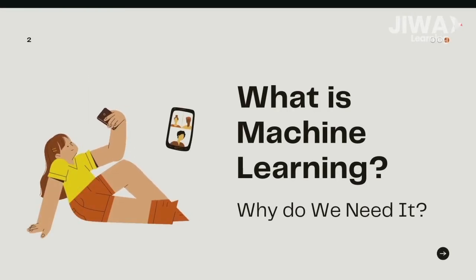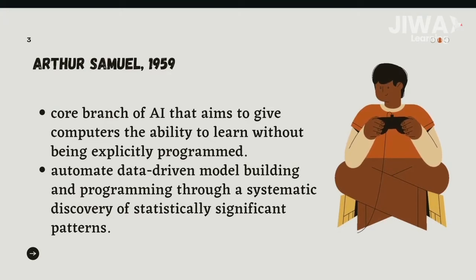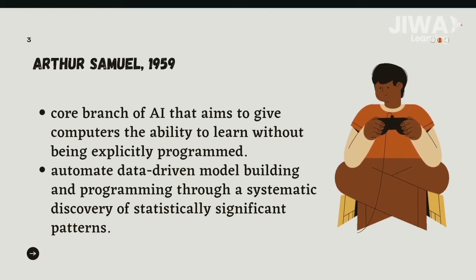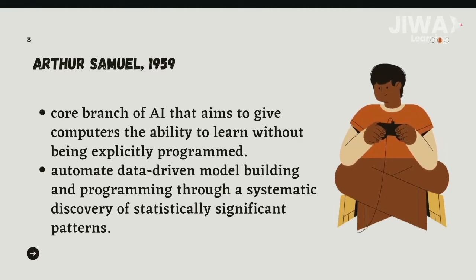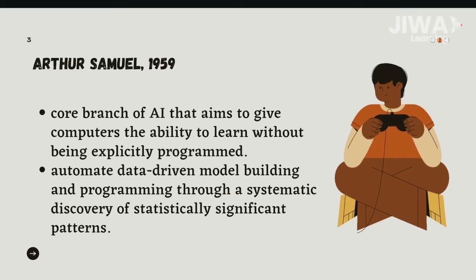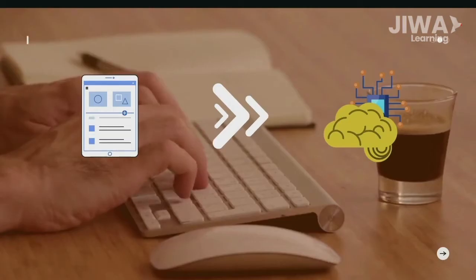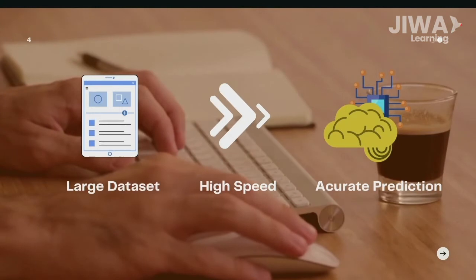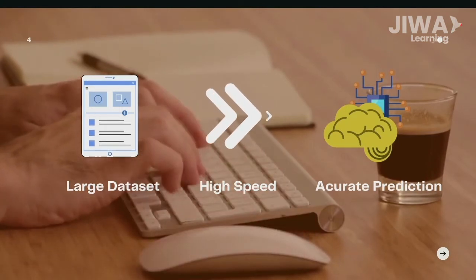What is machine learning, and how many types of machine learning are often used to solve problems? Arthur Samuel in 1959 defines machine learning as a core branch of AI that aims to give computers the ability to learn without being explicitly programmed. It enables computers to automate data-driven model building and programming through a systematic discovery of statistically significant patterns in the available data.